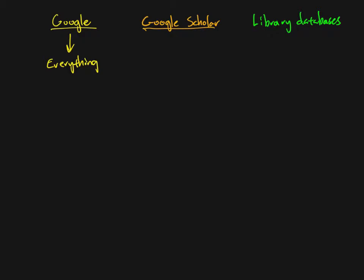Google Scholar has an algorithm that is specifically going to try to focus the results on what you might call academic and professional sources. It will also give you patent applications or patents if you search for certain things, so it's not just limited to scientific journal articles — it's going to comb anything in the academic and professional realm. It'll also return book results if they seem relevant, but it's not going to give you personal websites or Wikipedia.